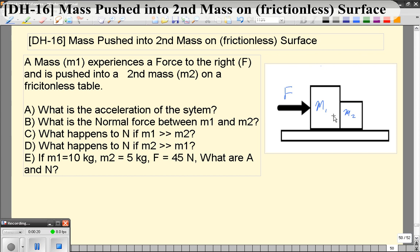Now in this problem we're first going to deal with a frictionless case, and in another problem we'll deal with what happens when there's friction. So we want to find out what the acceleration of the system is, what the normal force is between the two blocks. Then we want to talk about what happens if M1 is really big, what happens if M2 is really big, and what you get when you have actual numbers in the problem.